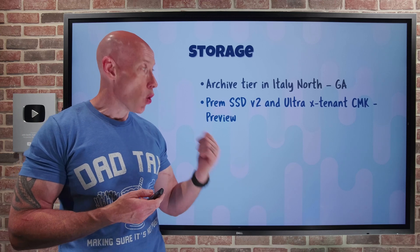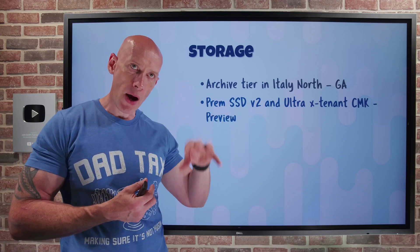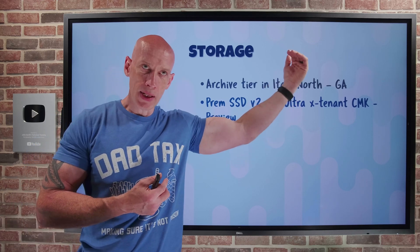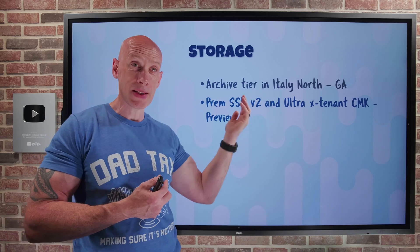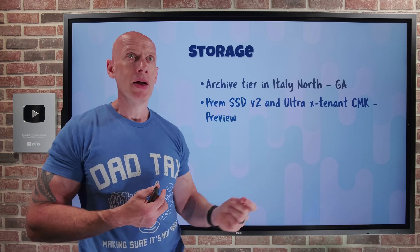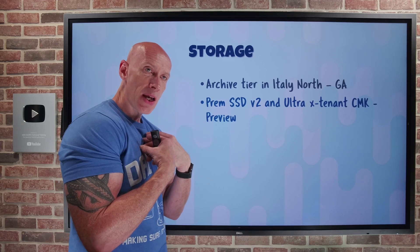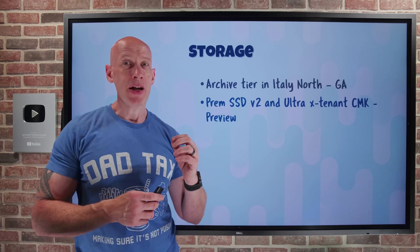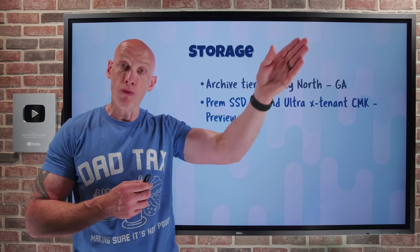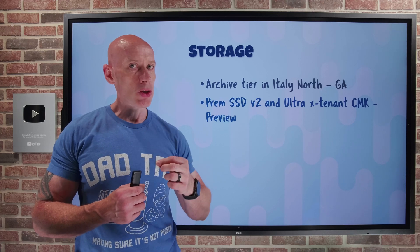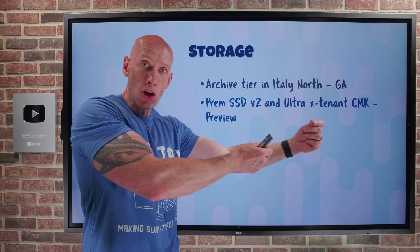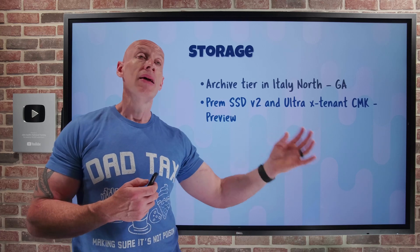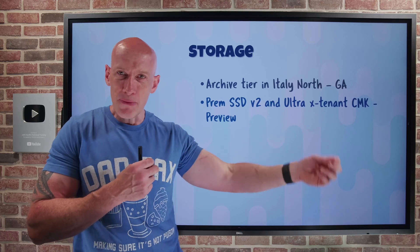Premium SSD V2 and Ultra Disk both support dynamic IOPS and throughput — you can set values separate from capacity and change them while the disk is in use. Ultra has higher limits and slightly lower latency than Premium SSD V2, but both are sub-millisecond. Now you can use cross-tenant customer managed keys, meaning the key and key vault used for encryption can be in a subscription in a different tenant from the actual disks. This is useful for SaaS solutions where customers want full control of the key encrypting their content.